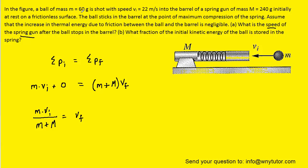And then the initial speed of the ball was given as 22 meters per second. The mass of the spring gun is also given in grams, so we'll make sure to convert that into kilograms. And when you compute that you should get a final speed of exactly 4.4 meters per second. So this would be the correct answer to part A of the question.